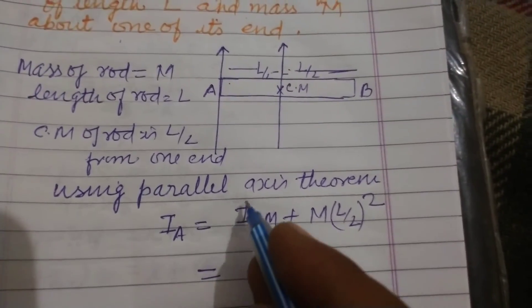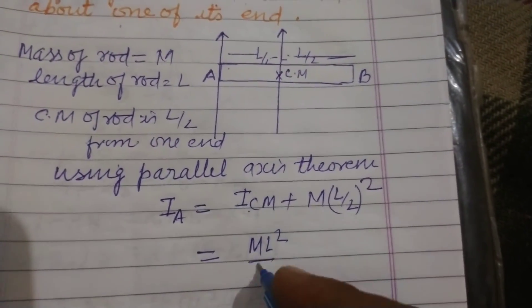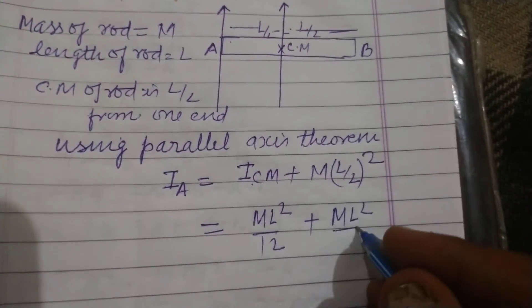And you know that the moment of inertia of a rod about its center of mass is ML²/12, plus ML²/4.